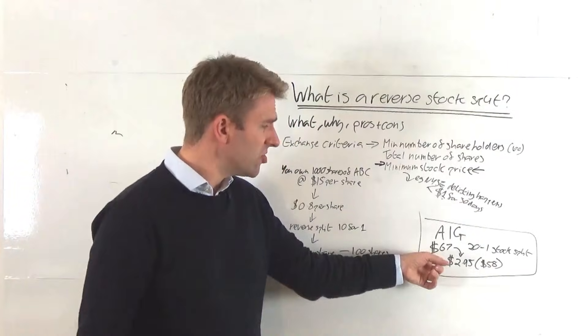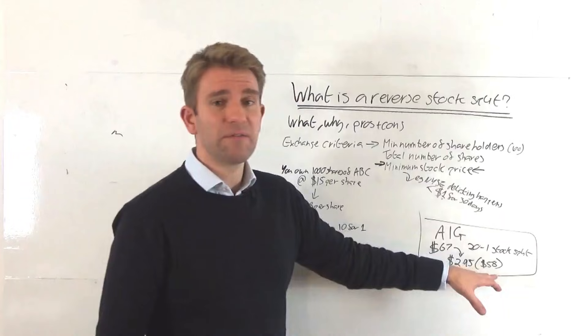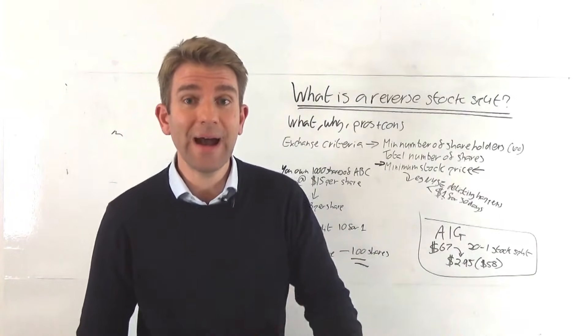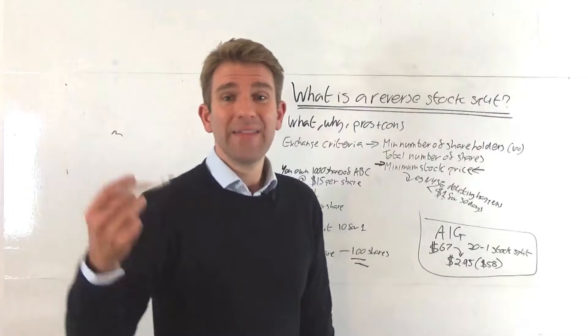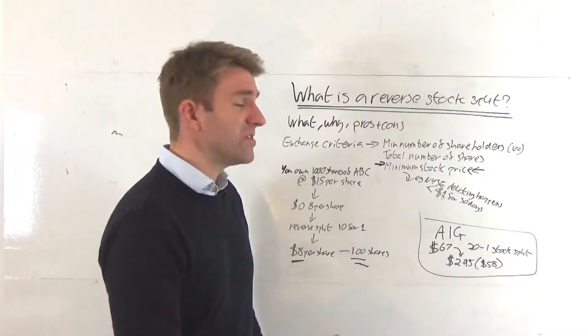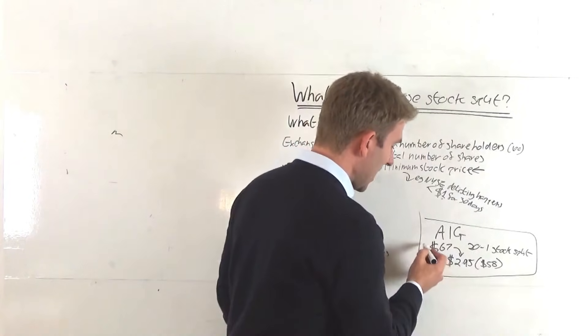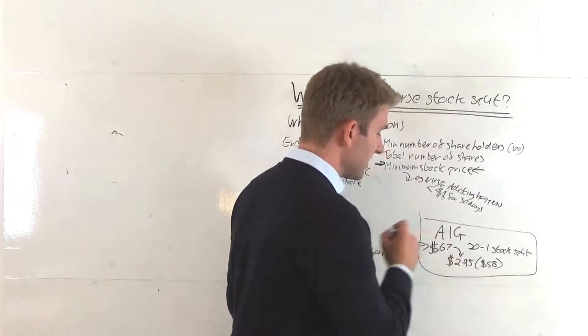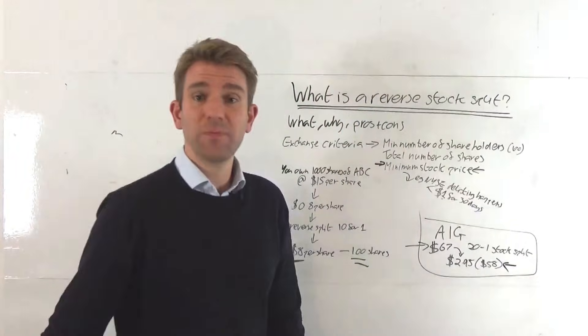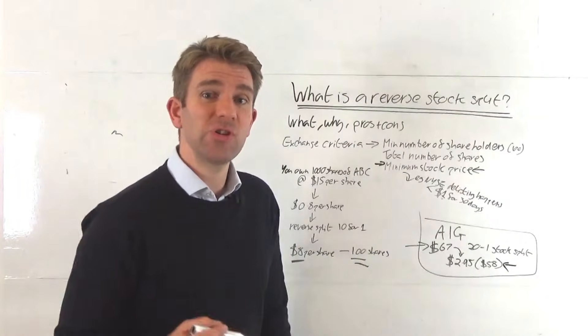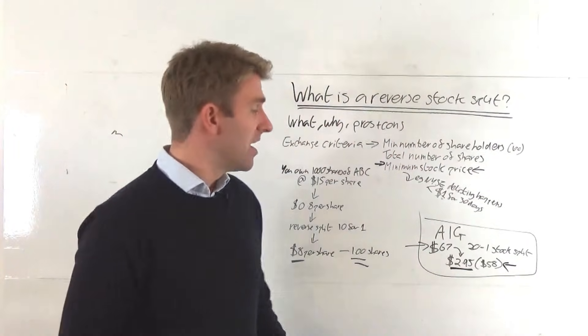AIG was trading for example at $67, then it was trading at $58, and that sounds not too bad. But in between that $67 to $58 move, they actually had to undergo a 20-to-1 stock split, which in reality means that the shares that you had, let's say one share at $67 and you held it all the way through and it's now $58, you think, well, it's not too bad. But in reality, that actual share is really worth $2.95 because of the reverse stock split.